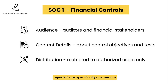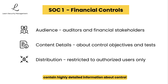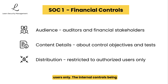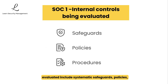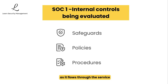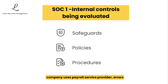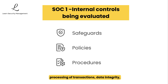SOC 1 reports focus specifically on a service organization's internal controls that could impact the financial reporting of their user entities. SOC 1 reports are primarily intended for auditors and financial stakeholders. They contain highly detailed information about control objectives and tests, and their distribution is restricted to authorized users only. The internal controls being evaluated include systematic safeguards, policies, and procedures designed to ensure accuracy and reliability of financial information. For example, if a company uses a payroll service provider, errors in the provider's systems could affect the company's financial statements. The SOC 1 report would verify that the payroll provider has proper controls to ensure accurate transaction processing, data integrity, and appropriate access controls for financial information.